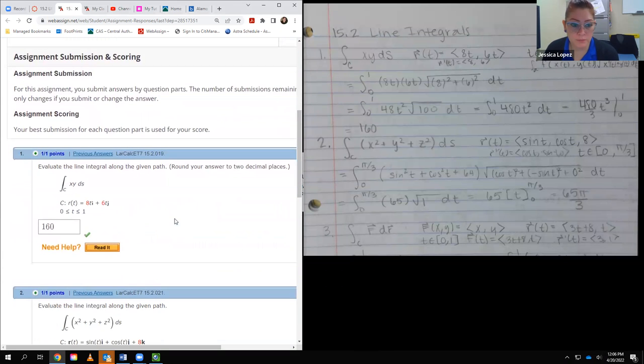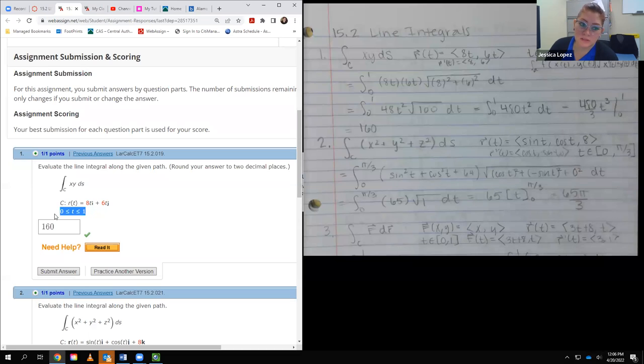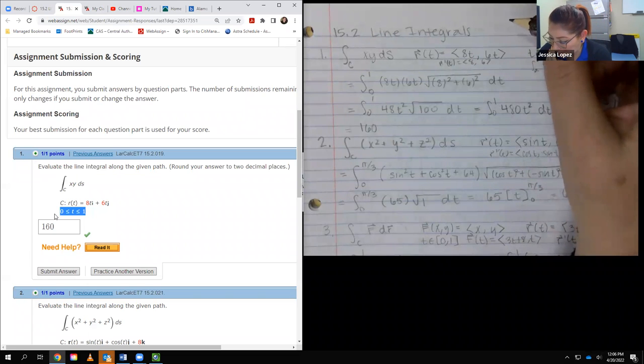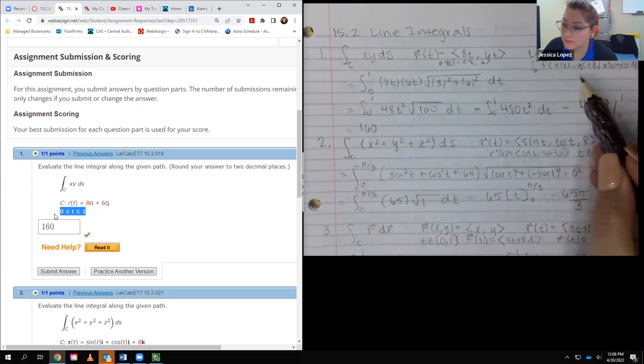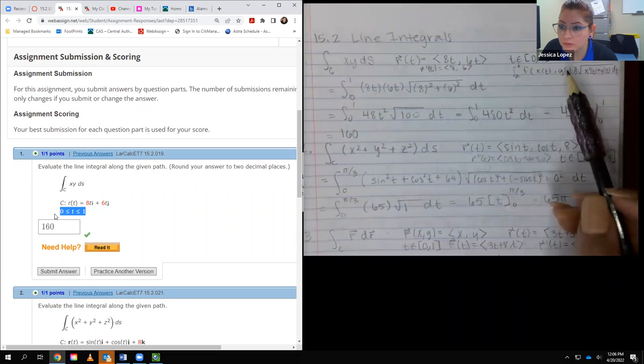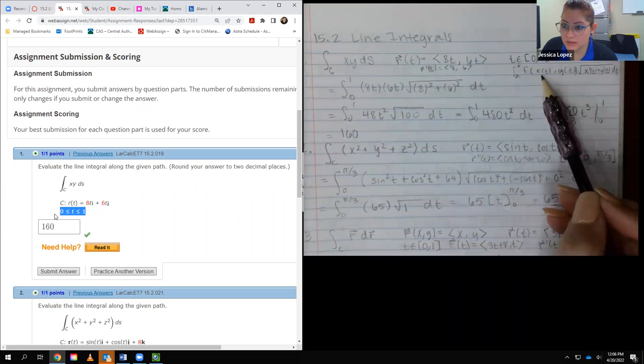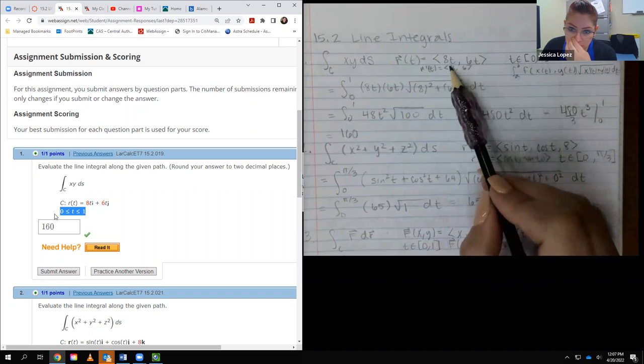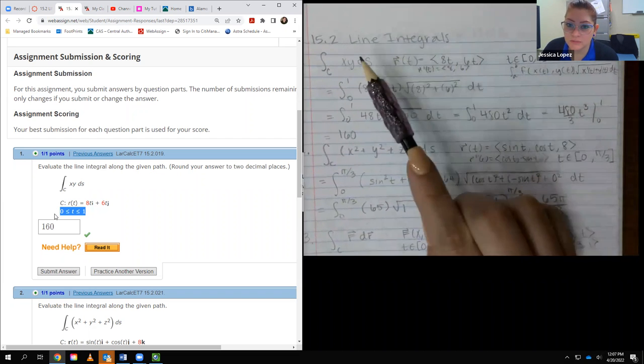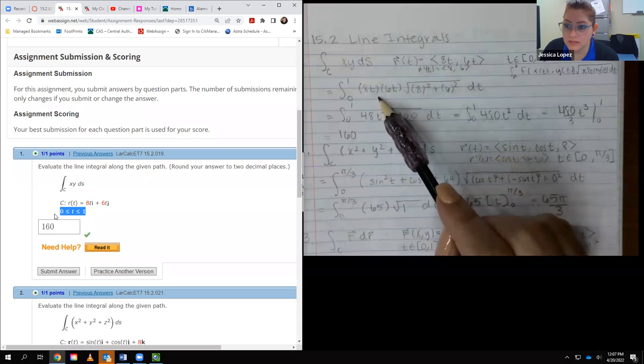So for number one, it says for us to evaluate the line integral with this particular curve and this particular bound. So what I did is I followed the formula that was given in the lecture notes on how to evaluate this. And so this is the formula there. But it's f of x, f of this component and this component, so you basically plug this in for x, you plug this in for y, and that's exactly what I did.